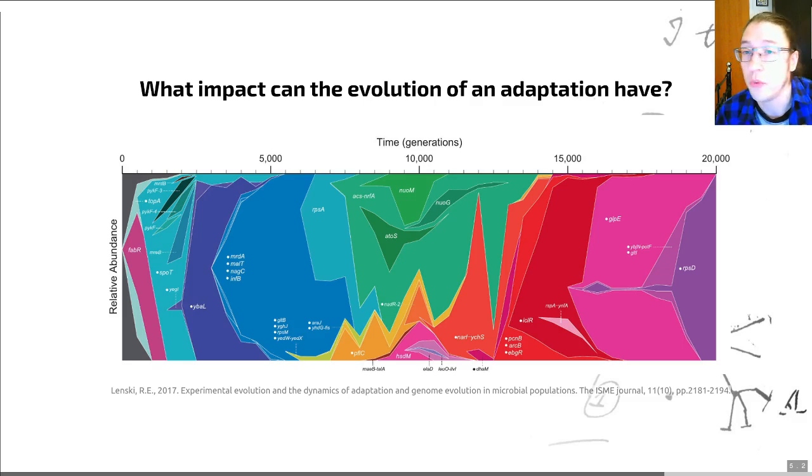Then what we see is that these beneficial mutations allow that particular strain of bacteria to take over the entire experiment, for the entire population to suddenly be made up of these new mutants that have this adaptation. That's a thing that's called a selective sweep. The mutation appears, those E. coli with a mutation are fitter, and ultimately they out-compete the other individuals in the population. On this diagram, the colors show 42 mutations within the E. coli in one population over the first 20,000 generations of this experiment.